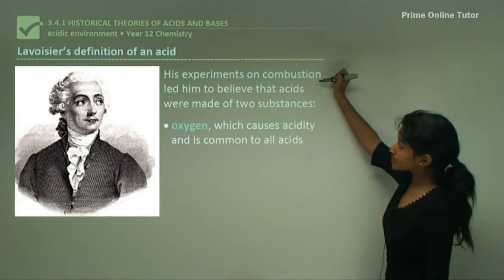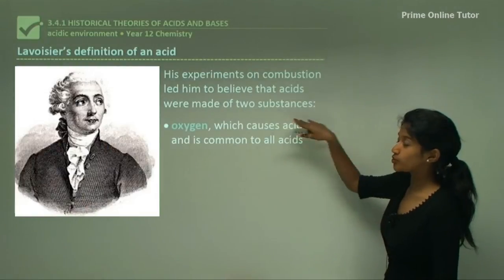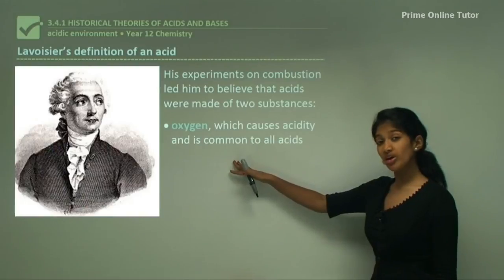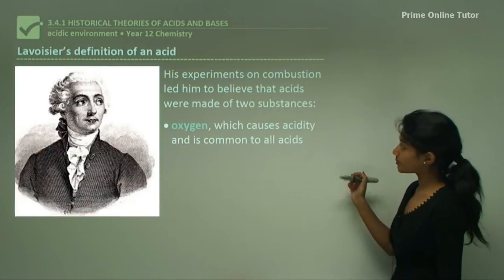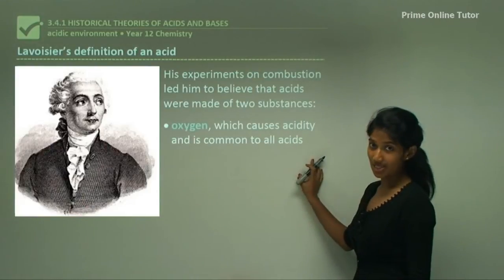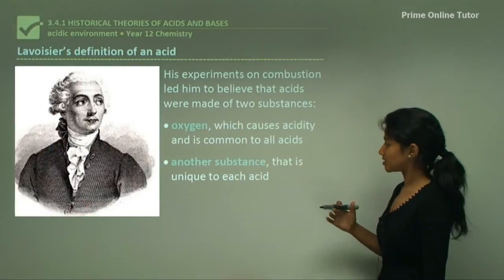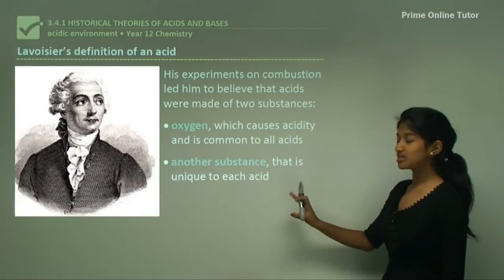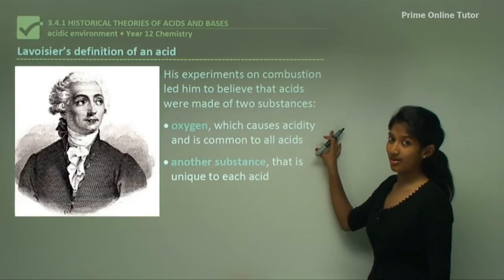His experiments on combustion led him to believe that acids were made of two different substances. One of them was oxygen — so all acids contain oxygen according to his definition — which causes acidity and is common to all acids. He also said acids contained another substance that is unique to each acid, while oxygen was always present.